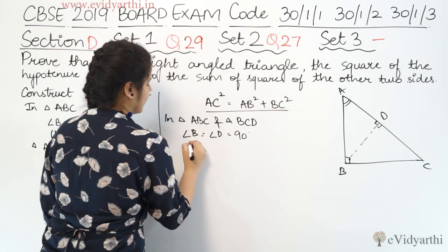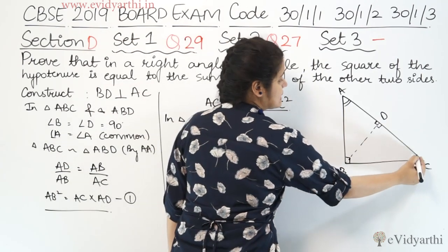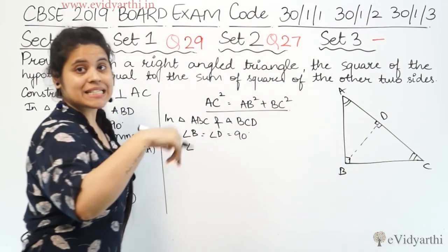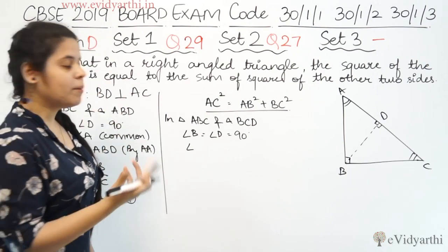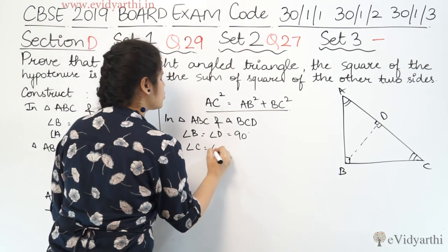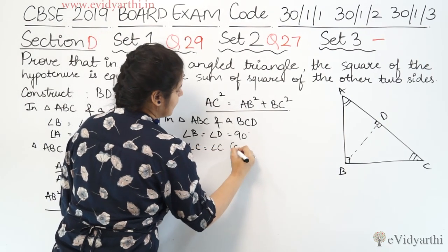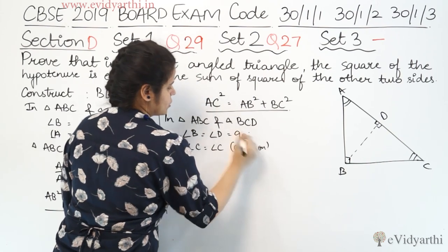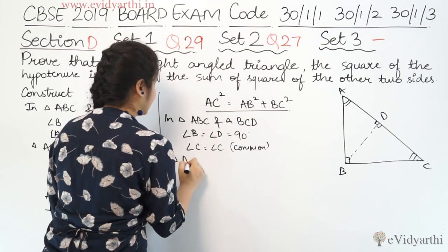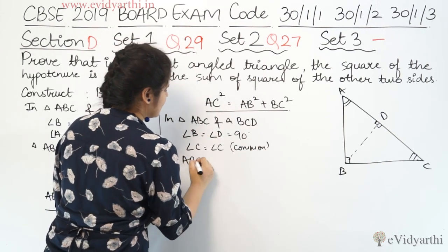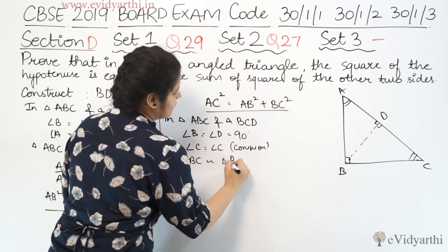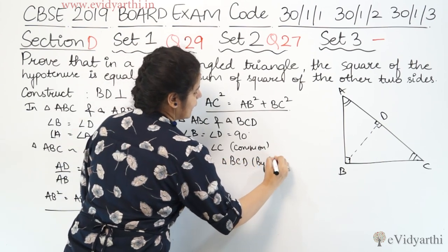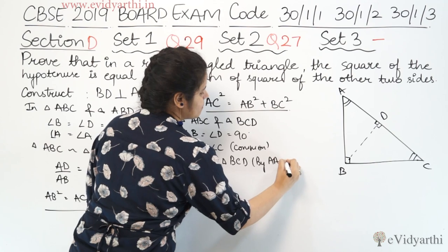दोनों 90 degree के हैं. अब कौन सा angle C दोनों में common है — छोटे वाले triangle में angle C है और बड़े वाले में भी. So, angle C equals to angle C, that is common. दो चीजें मार पास आ गईं — we can say triangle ABC is similar to triangle BCD, again by AA similarity.